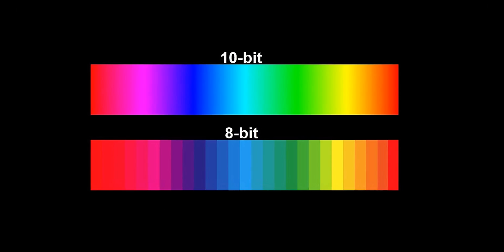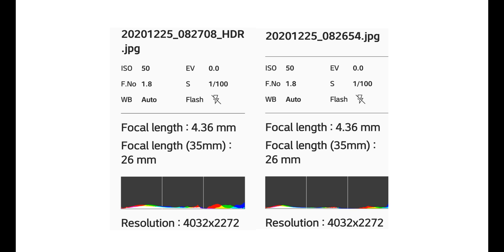HDR stands for High Dynamic Range and is currently the ultimate upgrade for video content. The opposite term is called SDR, which stands for Standard Dynamic Range. The main reason why HDR is better than SDR is that it offers an extended brightness range of up to four times that of SDR, plus an extended color depth of 10 instead of 8 bits. 8-bit color depth can deliver 16.77 million possible colors, while 10-bit is capable of over 1 billion color tones. With HDR content, light image areas are displayed much lighter and dark image areas are displayed even darker. Thanks to the extended color depth, more color nuances can be displayed with more precise gradations within the brightness range, resulting in a much more realistic and deeper image representation.